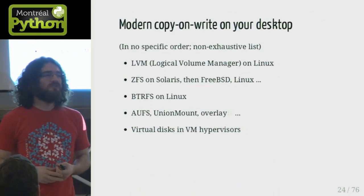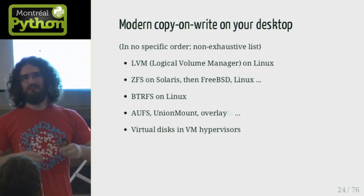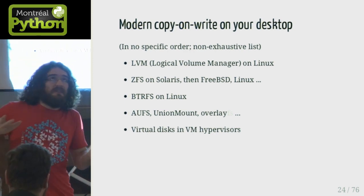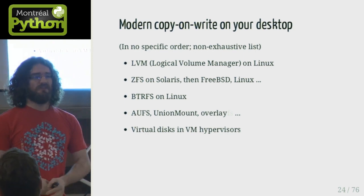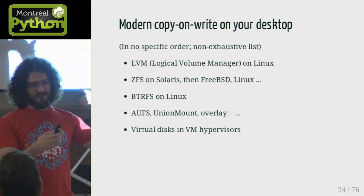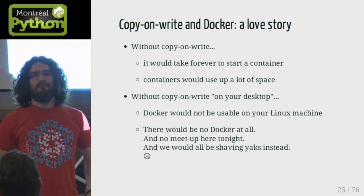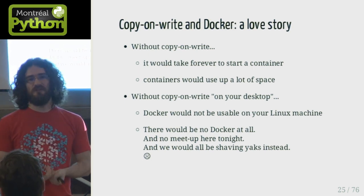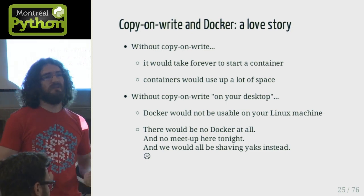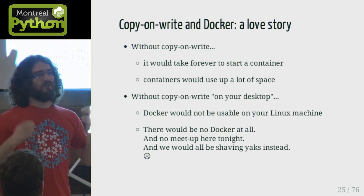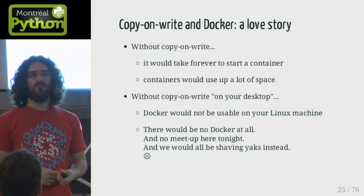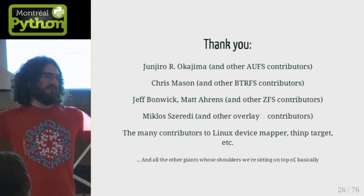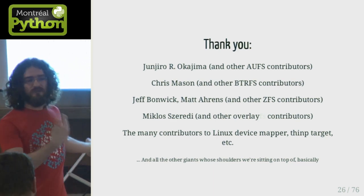Copy-on-write used to be implemented only in big storage systems — think NetApp, big expensive arrays full of disks. But over the last 5–10 years it became available on desktop systems: LVM on Linux, ZFS on Solaris, then also BtrFS, AUFS, and so on. That was extremely important for Docker — without copy-on-write, `docker run` would make a full copy every time, which would be slow and nobody would have gotten excited about Docker. Thanks to copy-on-write, creating tens, hundreds, or thousands of containers on the same machine is super easy.